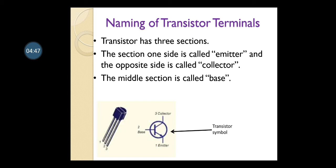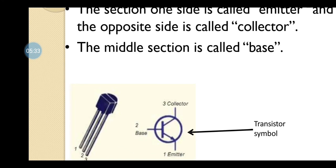What are the names of the transistor terminals? The transistor has three terminals. The first terminal is called the emitter. The second terminal, exactly opposite, is called the collector. The middle terminal is called the base. You can also see the transistor symbol here — this symbol is of the NPN transistor. There are two types of transistors: NPN and PNP, both having different symbols. This symbol shows the actual transistor schematic.